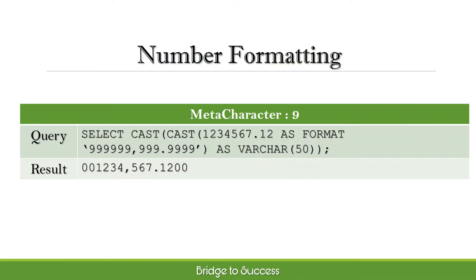MetaCharacter 9 displays formatted decimal digits with extra zeros at the starting position. Extra zeros will be added to make the size of the output formatted number equal to the number of MetaCharacter 9 specified in the format string. In the example, since 9 digits of the 9 MetaCharacter are used in the format but only 7 digits before the decimal point are present in the source number, therefore two zeros are prefixed in the output.